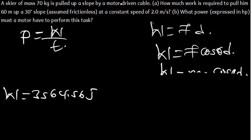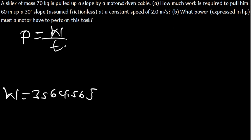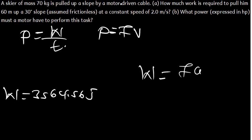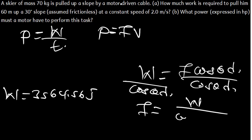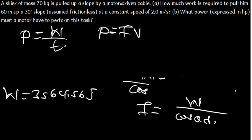Since we don't have time but we have velocity, power equals force times velocity. We need to find the force. From the work formula W = F·cosθ·d, we can rearrange to get F = W ÷ (cosθ × d). Plugging in: F = 3564.56 ÷ (cos30° × 60).